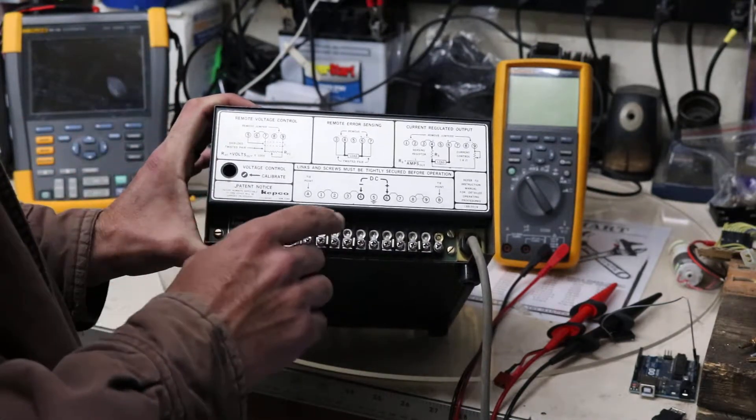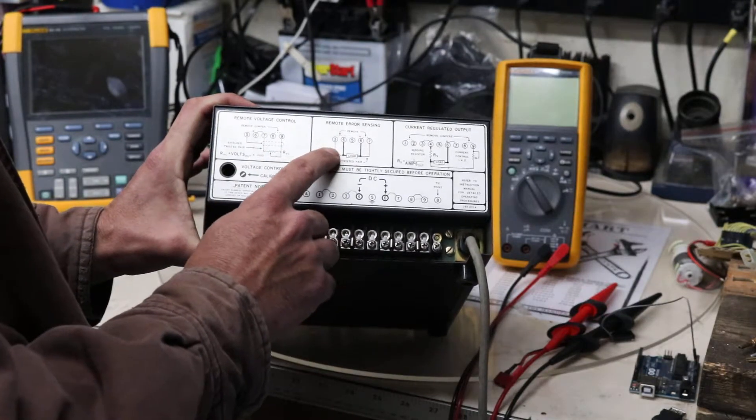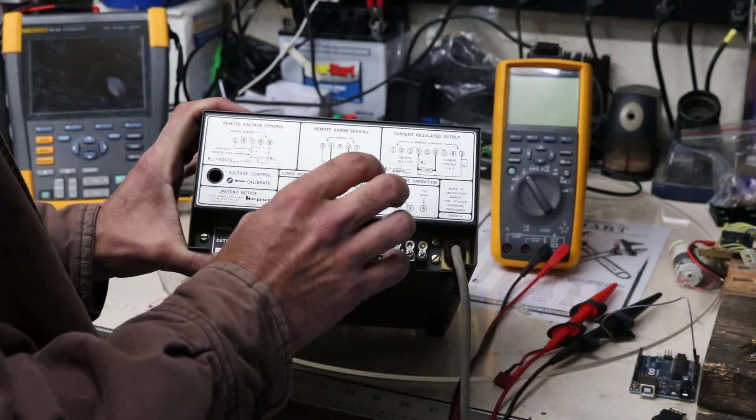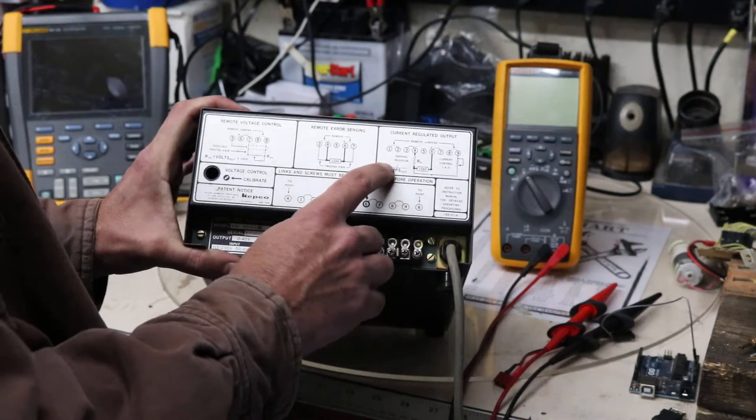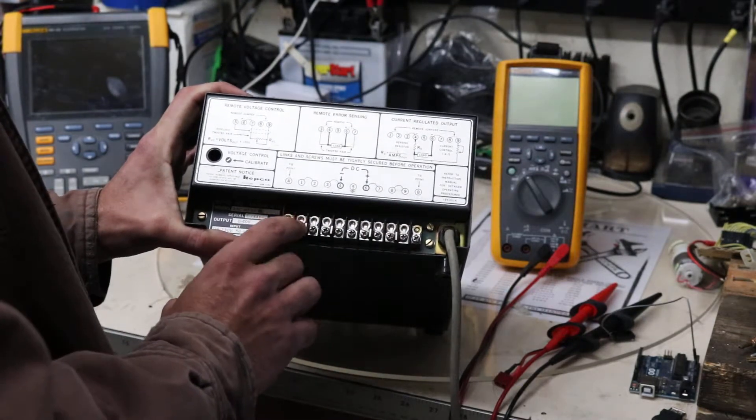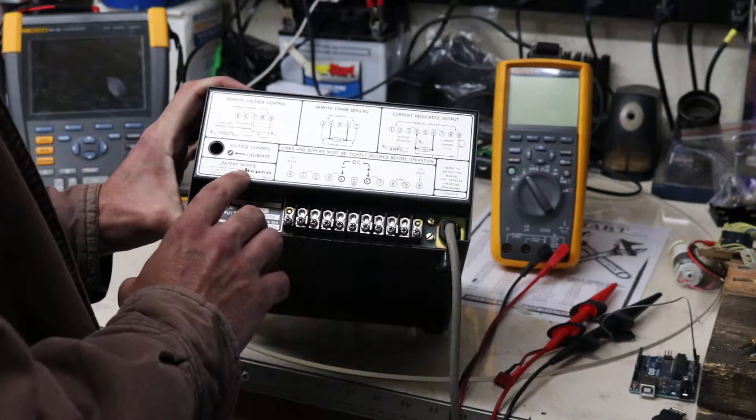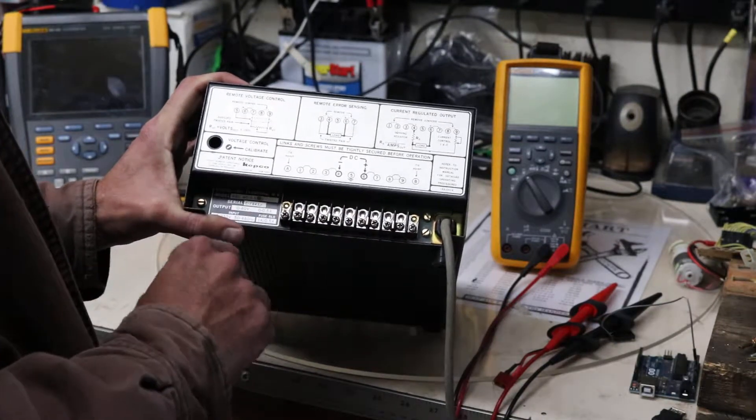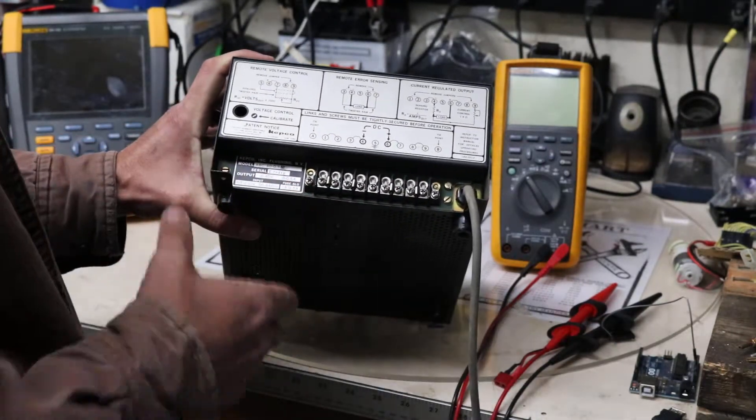This is if you wanted to put an external potentiometer somewhere else besides the front of the power supply to adjust the voltage. Remote error sensing, which would determine probably short circuits, things along those lines. And then our current regulation output, which you can set back here, hook up stuff back here instead of on the front terminals if you had something that needed a dedicated power supply but you didn't want to use the banana plugs on the front of it.